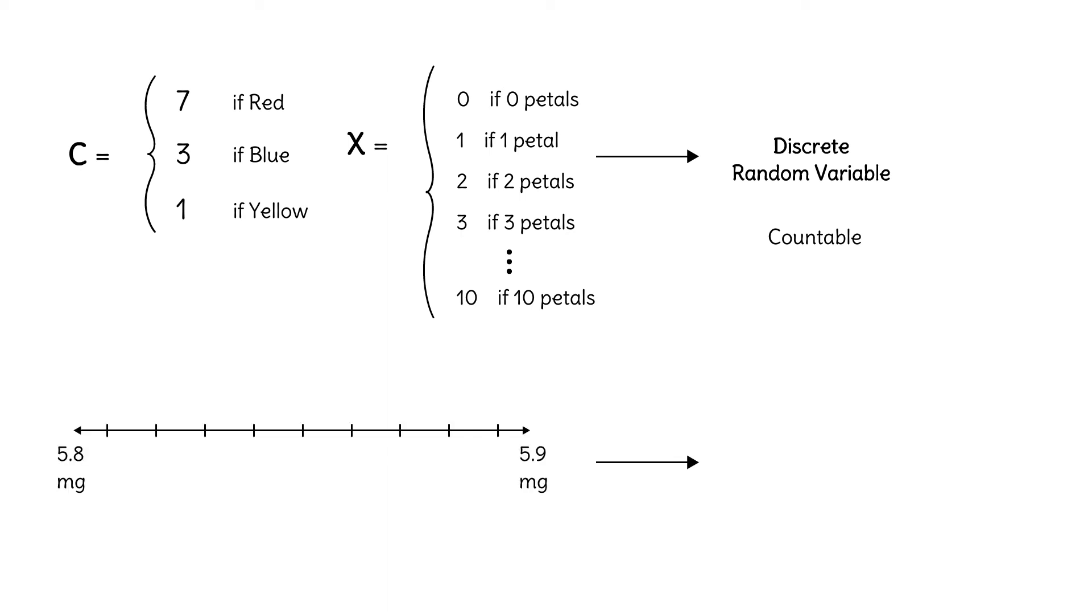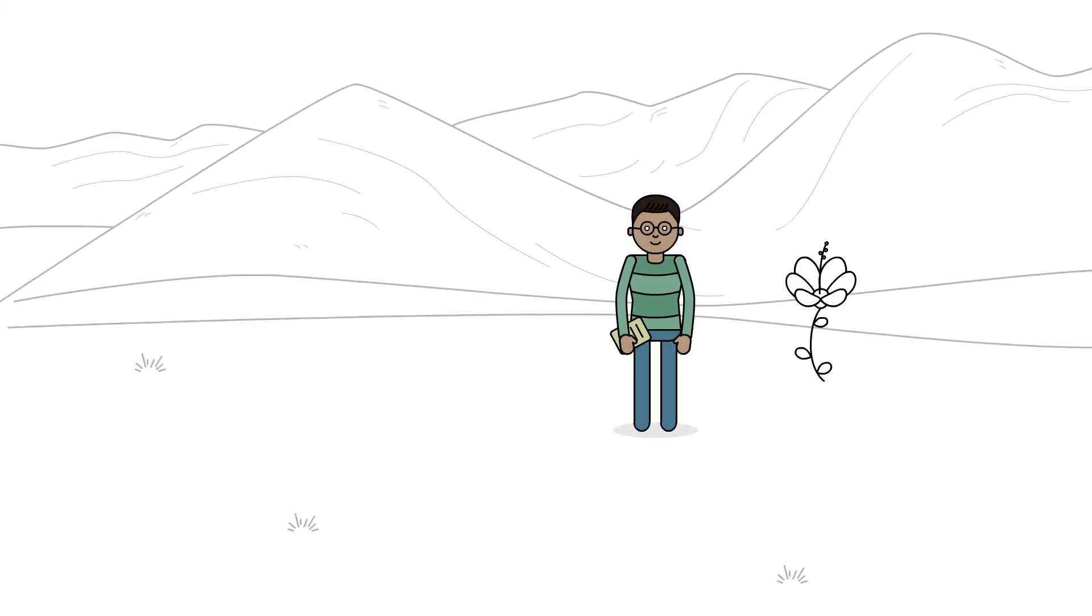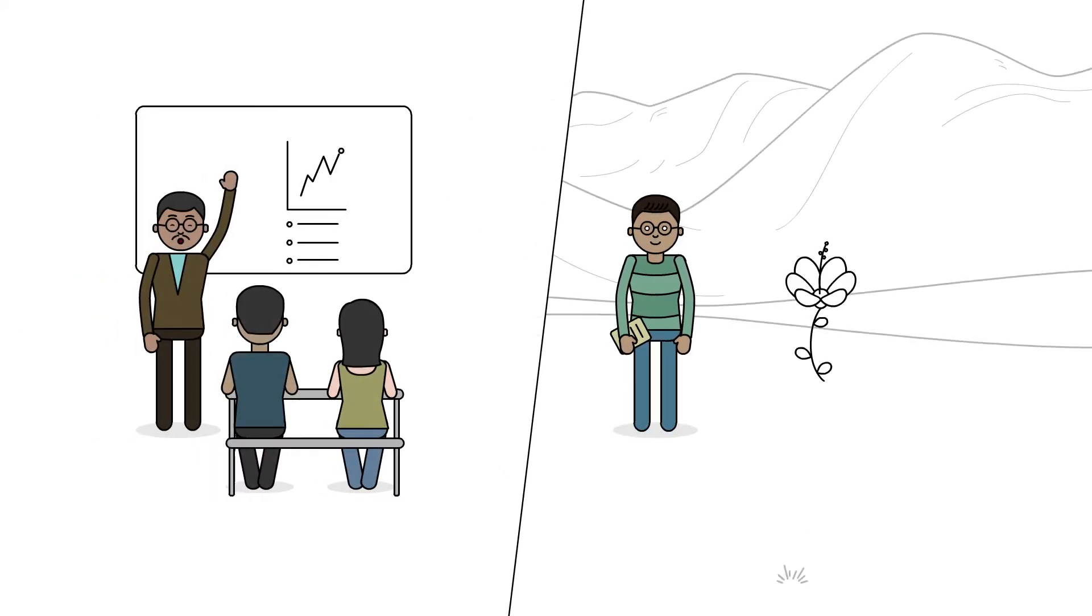If they are measurements, counting the results will be impossible, which means we have a continuous random variable. Botanists in alpine meadows and students in statistics classes need to understand random variables and determine whether they are discrete or continuous.